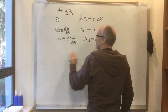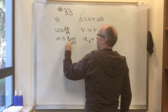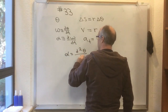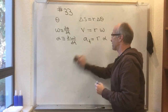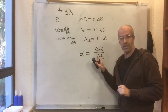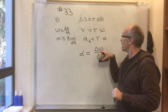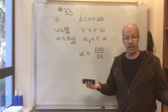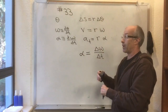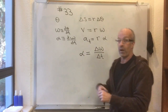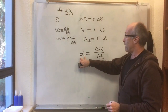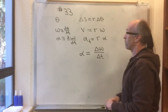Alpha, the angular acceleration, is by definition the time derivative of omega. Since omega is a time derivative of theta, you also have that alpha is equal to d squared theta dt squared. Sometimes you'll see alpha equals delta omega over delta t, but once again this is only good if the angular velocity is changing steadily. If it's not changing at a constant rate — like somebody applying the brakes harder and harder — then you can't use that formula unless you take the limit as delta t goes to 0. These are the definitions.